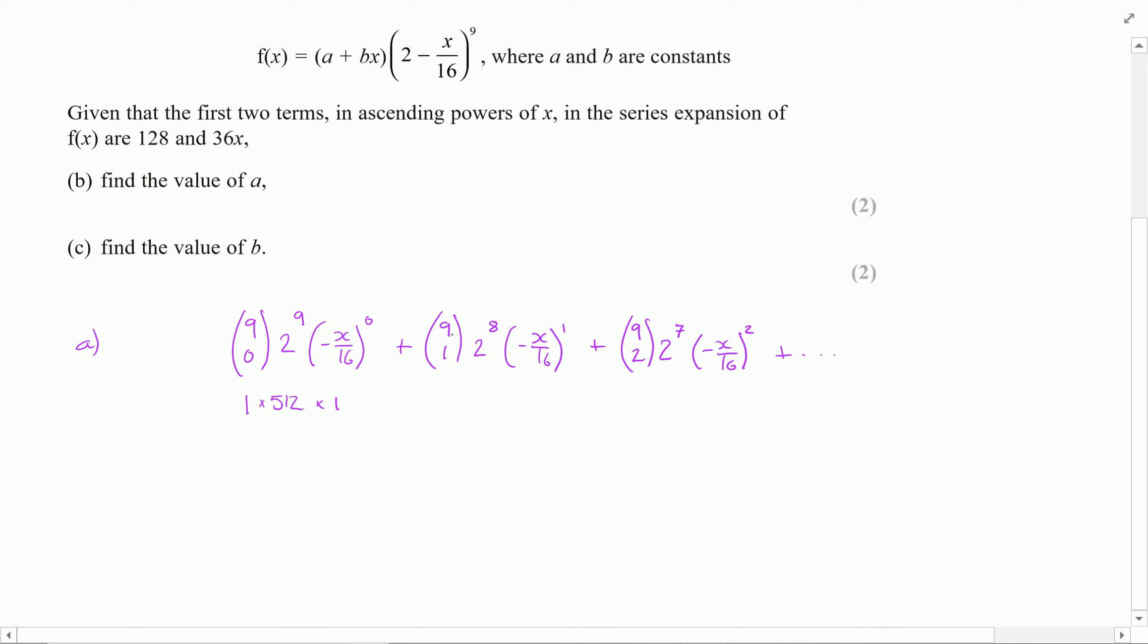The next part, 9 choose 1, that's 9, 2 to the power of 8 is going to be 256. Now here I'm going to deal with the negative. I've got this to the power of 1 so that is going to be negative so I'm going to pop that at the front and then that's just going to leave me in here with x over 16.